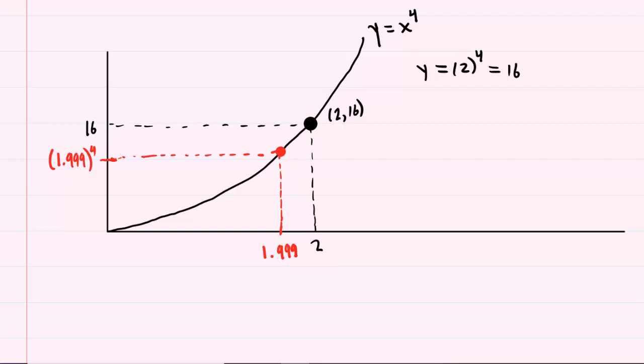Now here's the idea behind using a linearization. What we do is we draw a tangent line through the point 2,16. And that's designed to be a straight line.